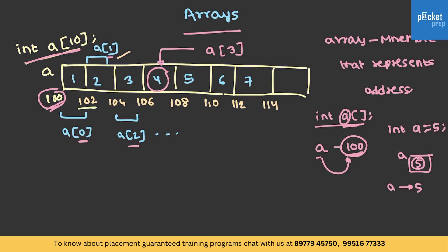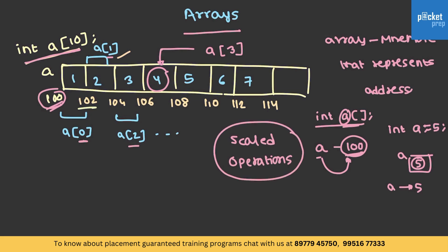You need to remember one specific term while dealing with arrays and pointers especially — that is scaled operations. Whatever happens with arrays and pointers generally happens according to the scale. Let's try to understand it with the help of an example.